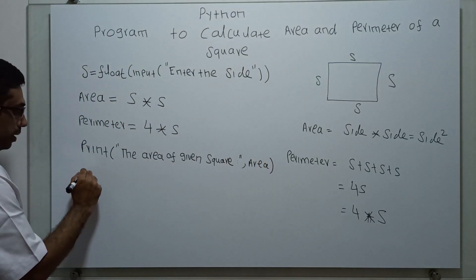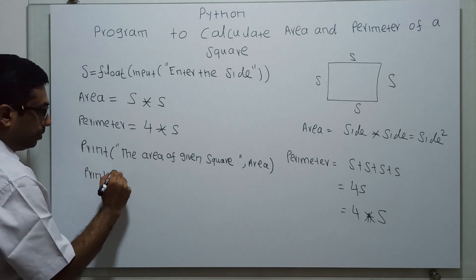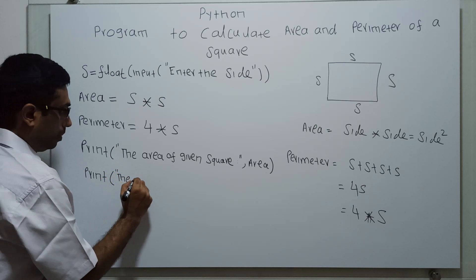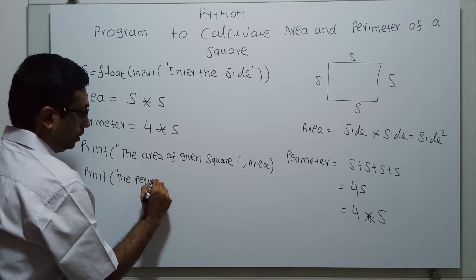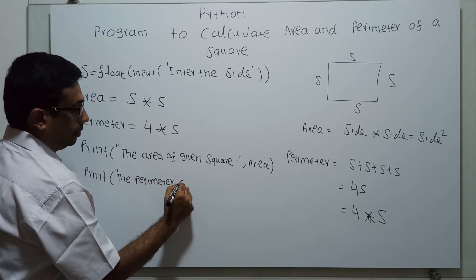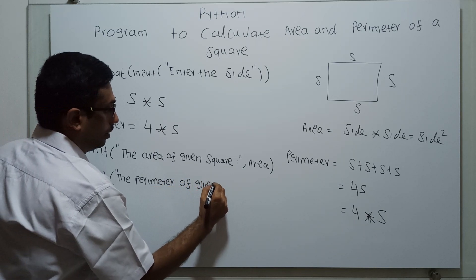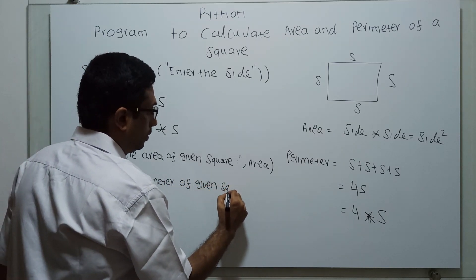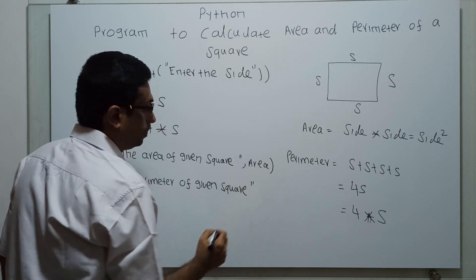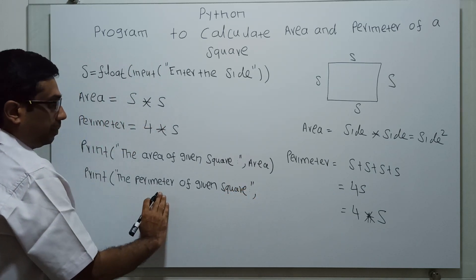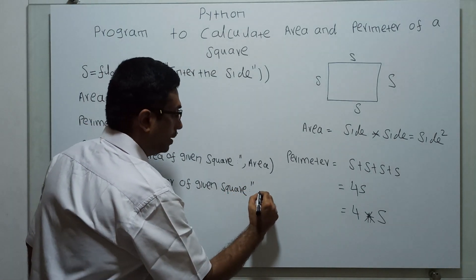Next, I am going to print the perimeter. Print the perimeter of given square. I am closing the quotation. The string will get printed - perimeter of given square - followed by the variable perimeter.